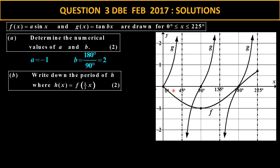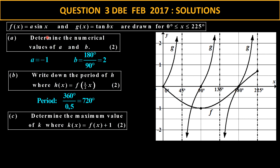Write down the period of h — a new function where I transform the sine curve to half of x. The period of the sine curve with x is the default 360, so I take 360 divided by 0.5, which gives 720. For the maximum value of this new curve, the maximum of the f sine curve is 1. So the maximum of the new function is 1 plus 1, which equals 2.